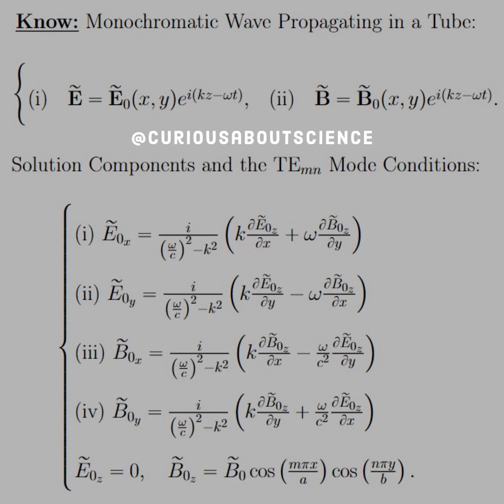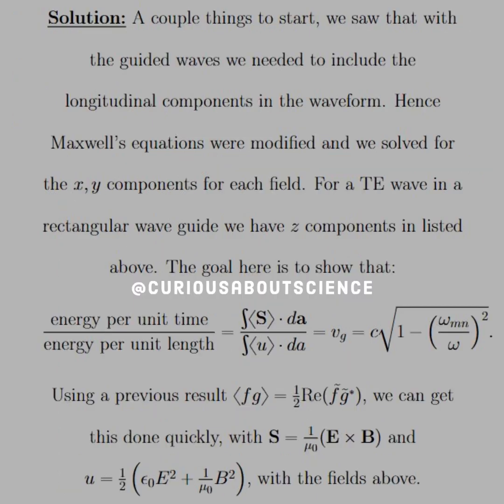And then we see that B naught Z is equal to a linear combination of the cosines. Again, solving things through. No big surprise there. Everything else is definitely a mess and we have to make appropriate substitutions. So let's be very careful with that solution.